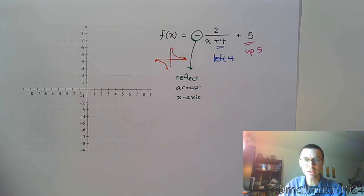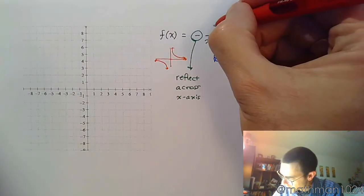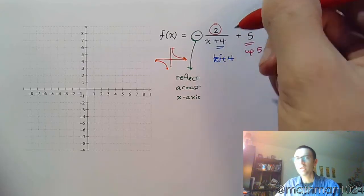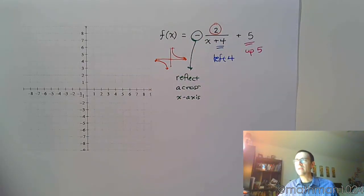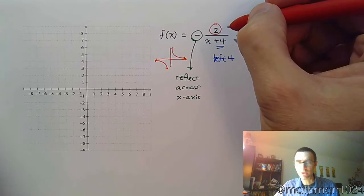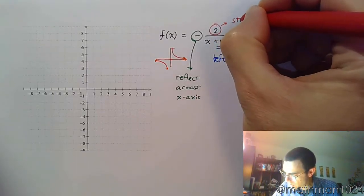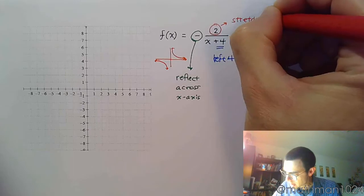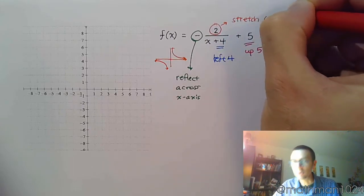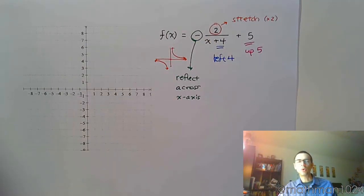Wait a minute, there's something else here. There's this 2. Now, having that 2 in the numerator is like having a value in front of your main function, which is going to cause you either to have a compression or a stretch. Well, since 2 is bigger than 1, this means that we're going to have a stretch by a factor of 2. So it's going to take the normal points that we would have had and just double their distance from the horizontal asymptote.